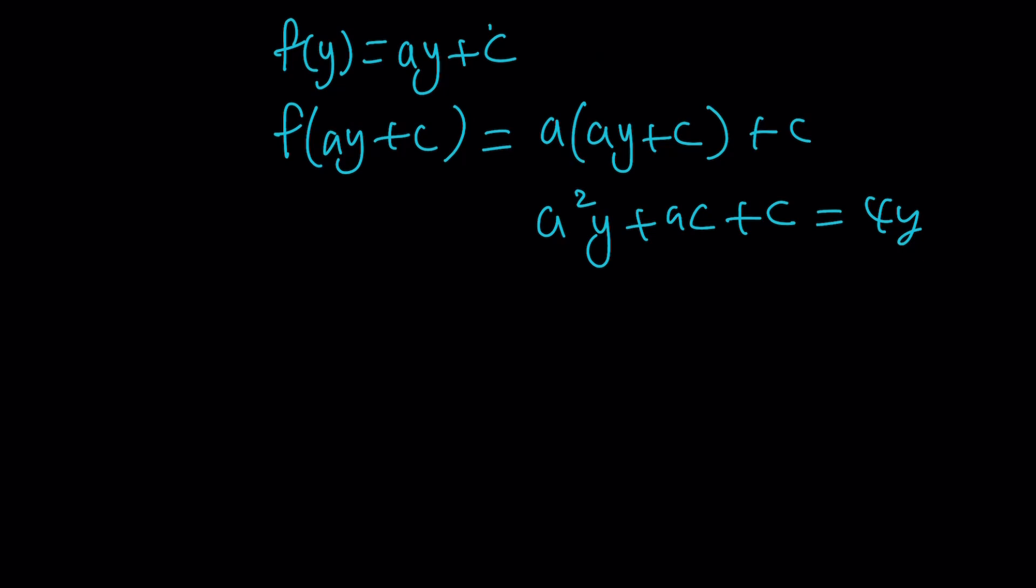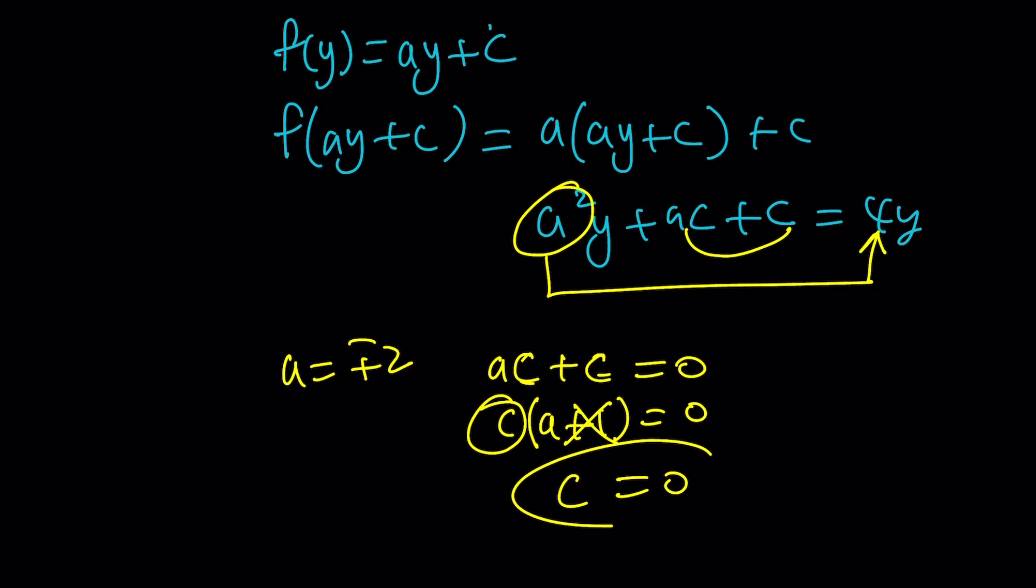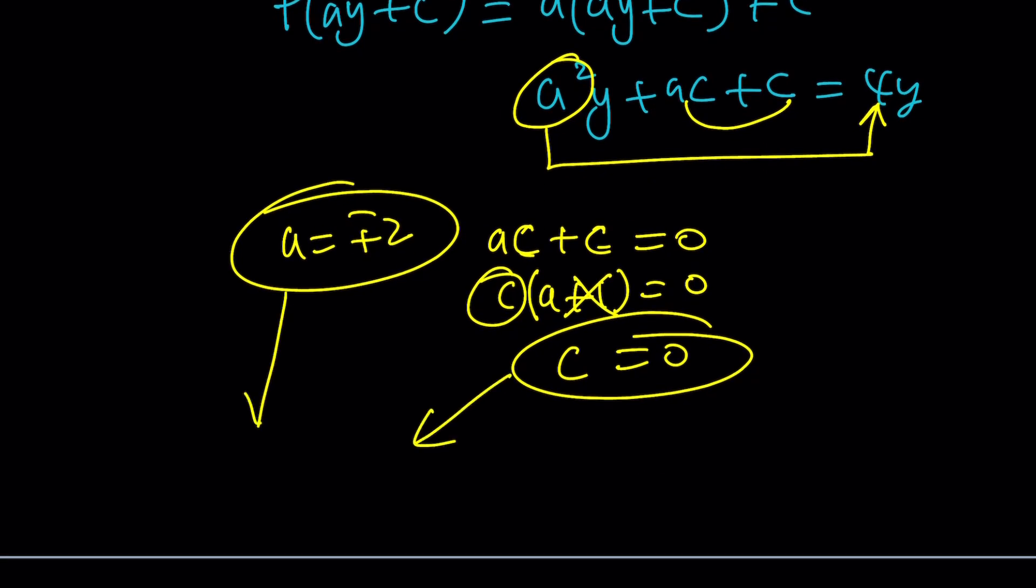So if you kind of arrange this you're going to notice that okay a squared is supposed to be 4. Because this is true for all y values right in the domain and this means a is equal to plus minus 2 but at the same time ac plus c is equal to 0. Because there is no constant on the right hand side. And if you take out c we get c times (a plus 1) equals 0 but we know that a plus 1 does not equal 0. This is not 0 therefore c needs to be 0.